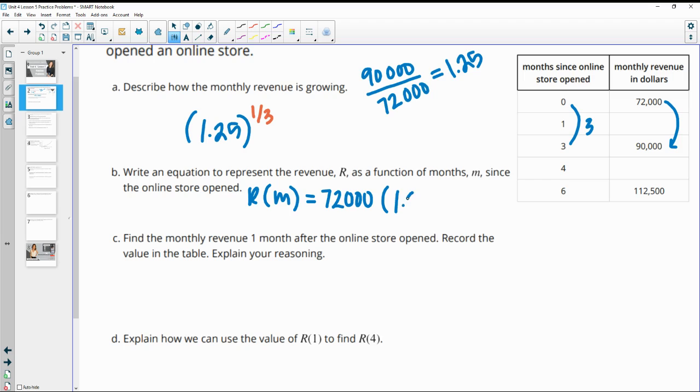And then it's growing by a factor of 1.25. And our exponent here, if we want it to be monthly, it's growing 1.25 every three months. So then this will be M divided by three, the number of months divided by three.